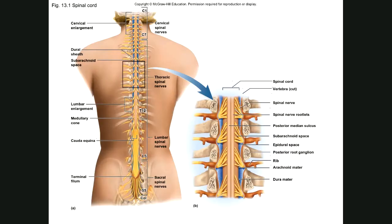Let's take a look at chapter 13 for discussion of the spinal cord. In figure 3.1, we can see the spinal cord. The spinal cord is a long tubular organ, and here we can see its location. We've looked at most of the anatomy of the spinal cord in lab class.